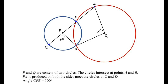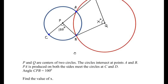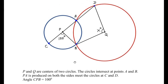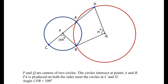Angle CPB is given as 100 degrees. We need to find the value of x, which is an angle in the circle with center Q. To find this, we are going to use some circle theorems. Starting with the circle having center P, angle CPB = 100° is the angle at the center. We make a construction by joining points A and B.